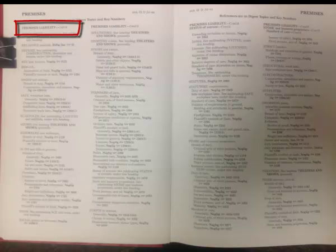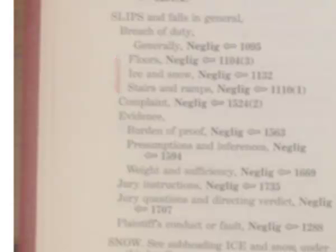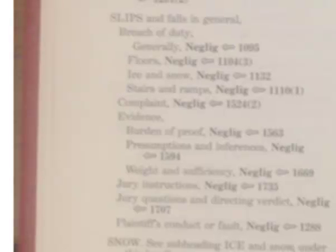Now I've moved on to the volume of the descriptive word index containing indexed terms starting with PO and ending with SH. I've turned to the page containing the heading PREMISES LIABILITY and the subheading SLIPPING AND FALLS IN GENERAL. If I'm interested in breach of duty generally, I should go to the volume in the digest containing the topic of negligence, key number 1095. But if I'm looking specifically for slipping and fall cases in specific factual situations like floors, stairs, or ice and snow, I should look at those specific key numbers. If I had a slipping and fall case involving a stairwell, I'd probably look at both. Remember, not everything is an indexed term, so if a term doesn't seem to be indexed, reach back into your list of search terms and try the next best one.